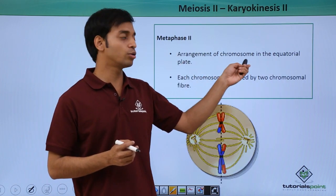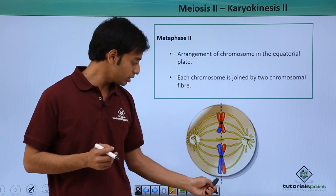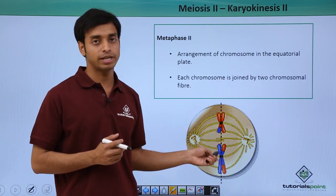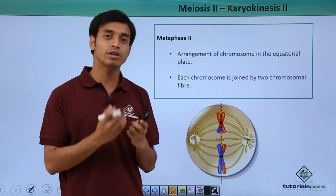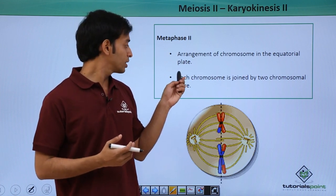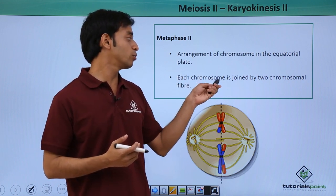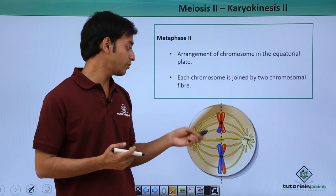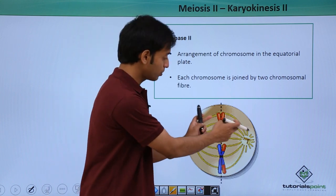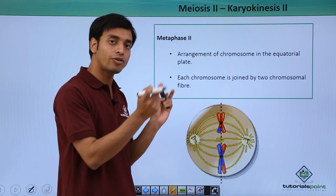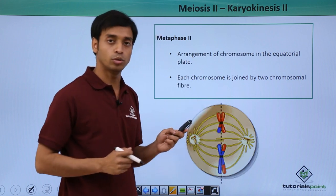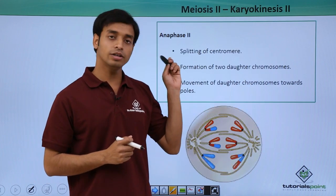After Prophase 2 comes Metaphase 2. In Metaphase 2, there is the arrangement of chromosomes at the equatorial plate. As you can see, the chromosomes are arranged in the central position of the cell, which is the equatorial plate. Each chromosome is joined by two chromosomal fibers — from the centromeres, each chromosome is joined by two fibers coming from the opposite poles.